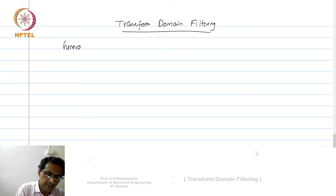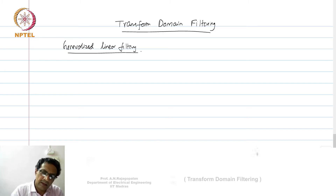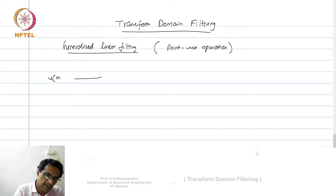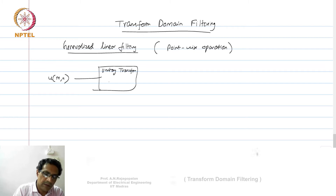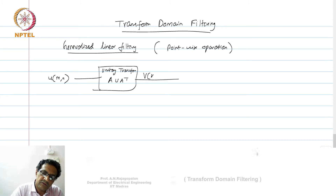We call it generalized linear filtering because transform domain filtering operations are typically done using a unitary transform and it is a point-wise operation. So you have an image u(m,n), you compute a unitary transform — typically this will be a DFT — and you compute a u a-transpose, where a is the unitary transform corresponding to 1D. In order to get a 2D unitary transform of u, you compute a u a-transpose, which gives you transform coefficients b(k,l).